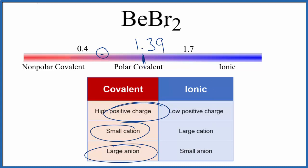This is Dr. V answering the question whether beryllium bromide is ionic or covalent. It is a covalent compound. Thanks for watching.